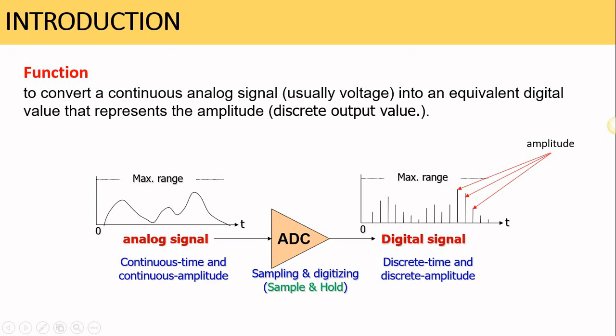Why discrete time? Because the data from the analog signal is only sampled at certain specific times, determined by the sampling frequency. The amplitude of the digital signal follows the original amplitude of the analog signal at those sampled time points.